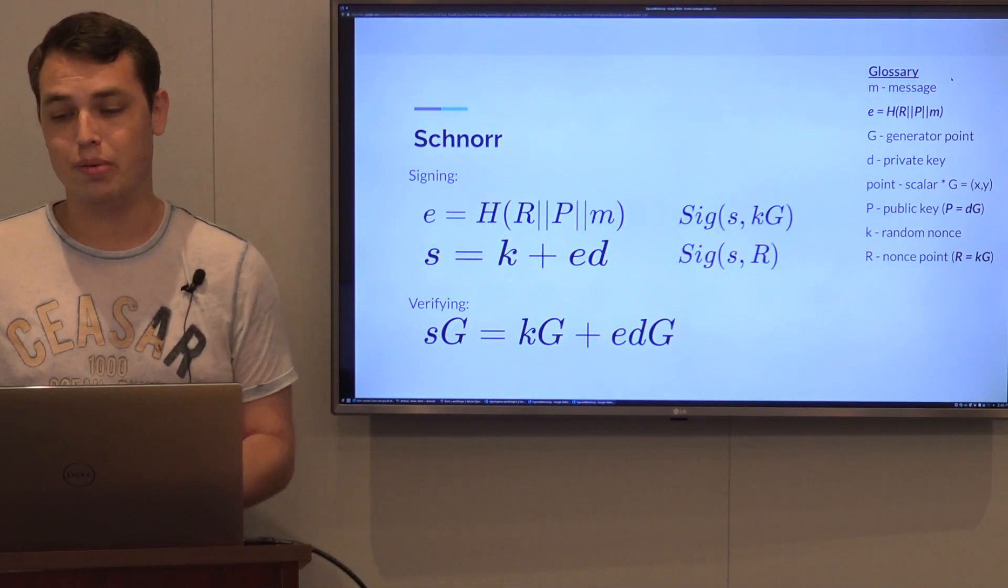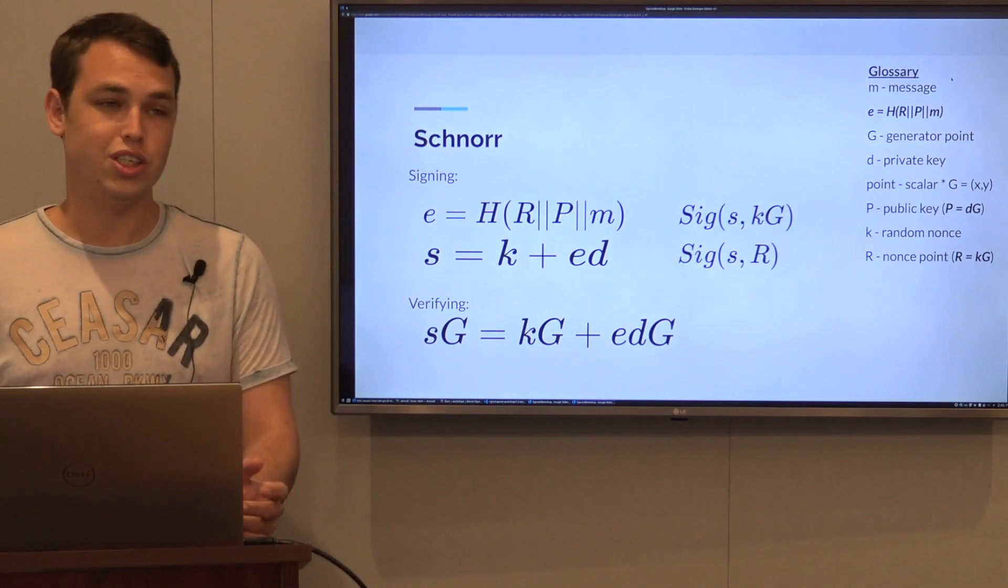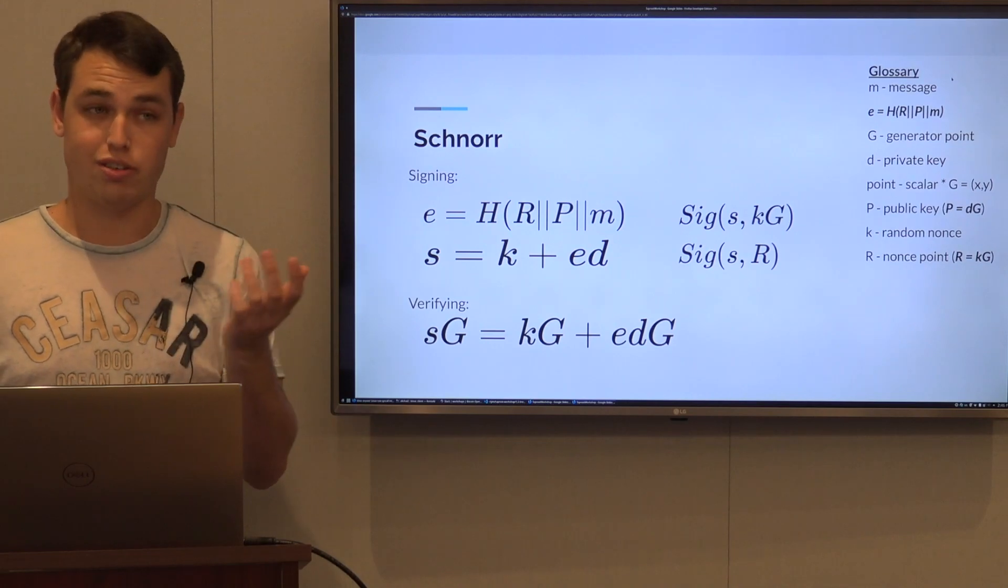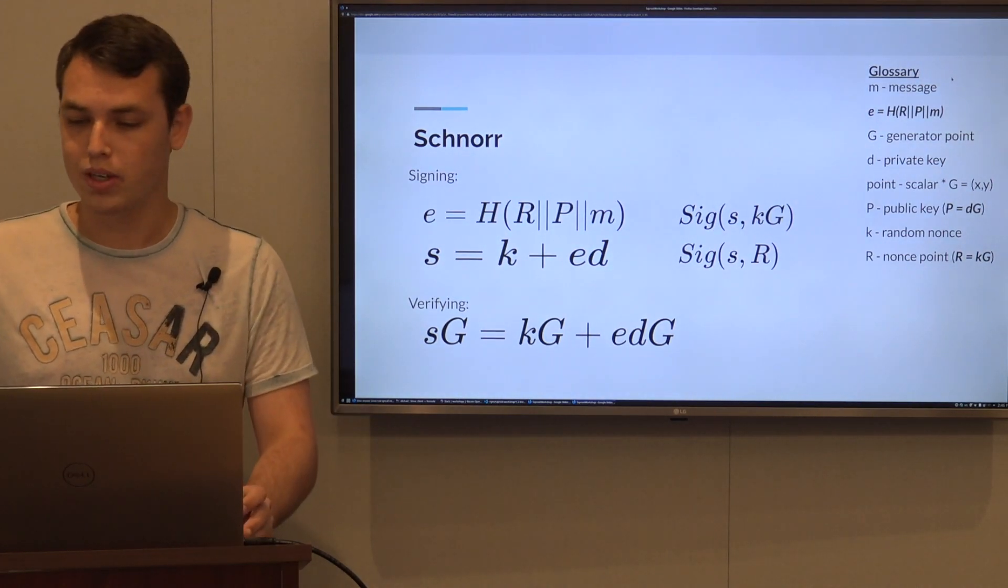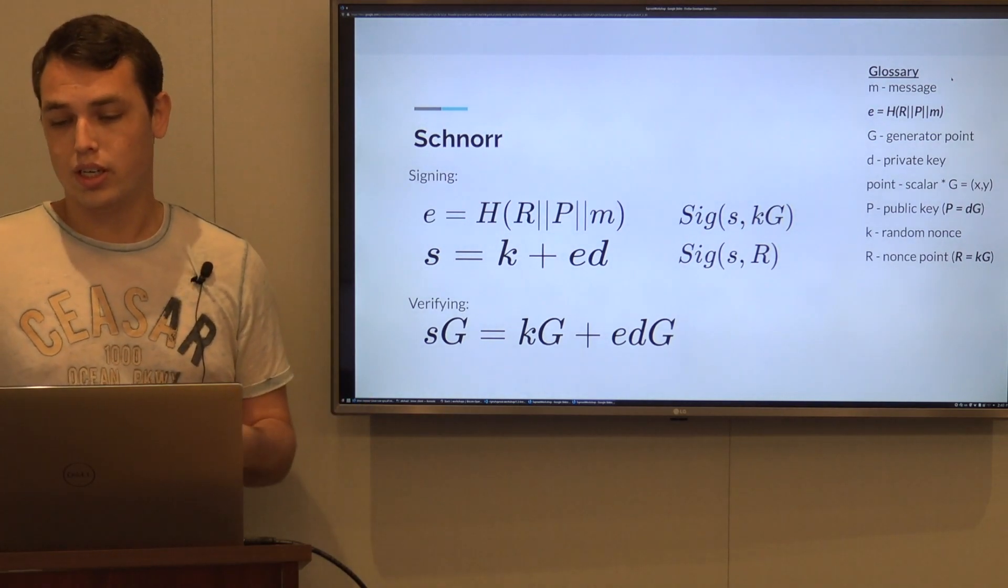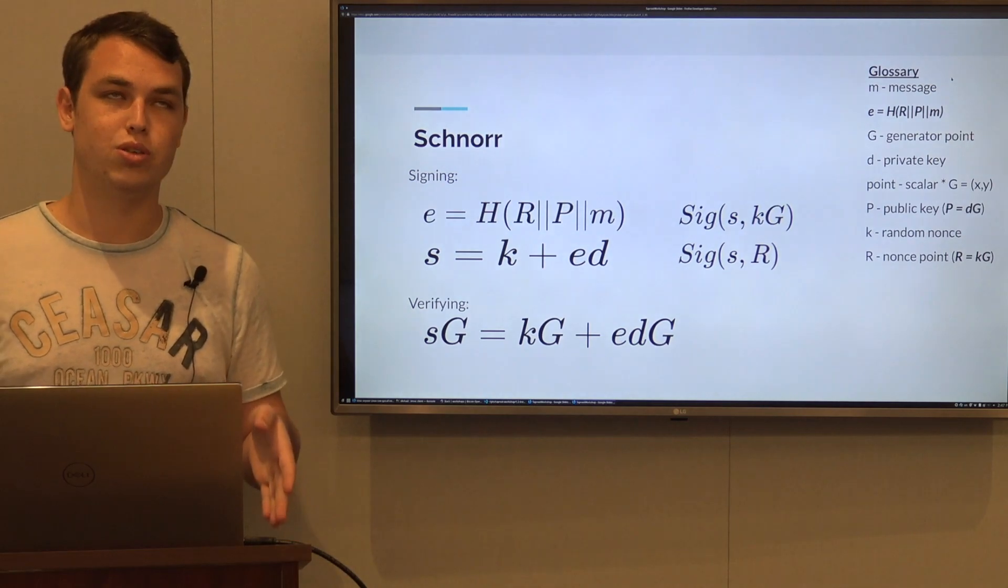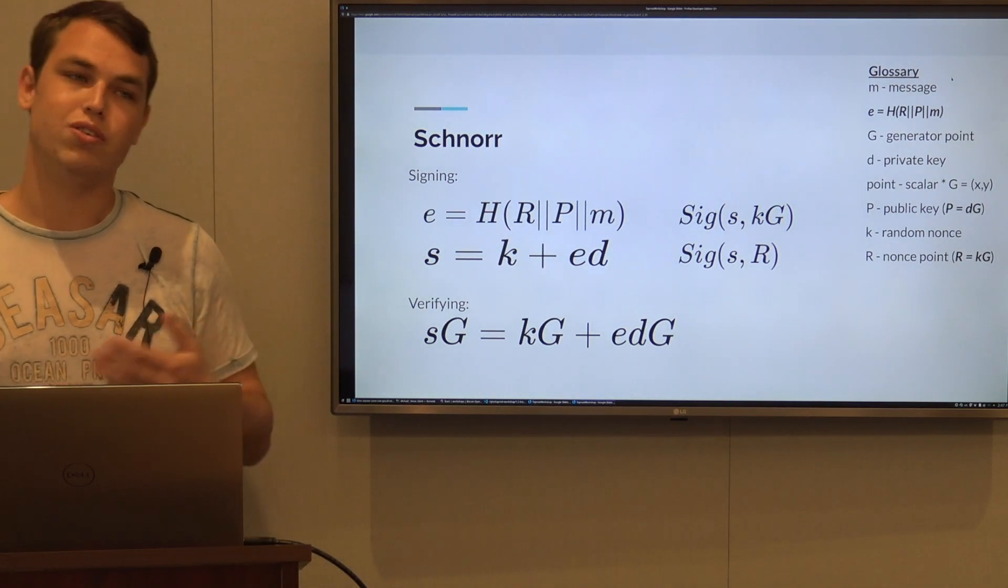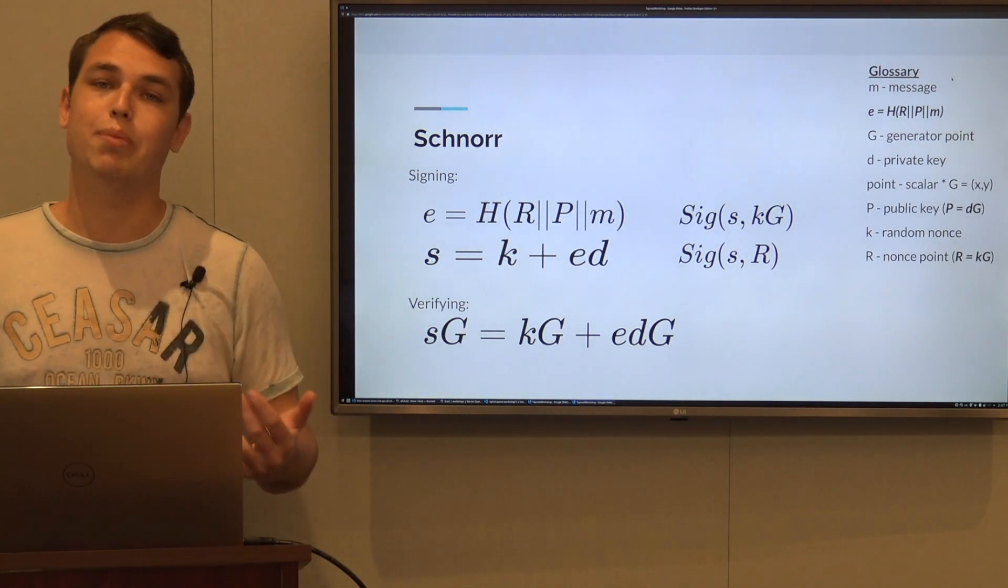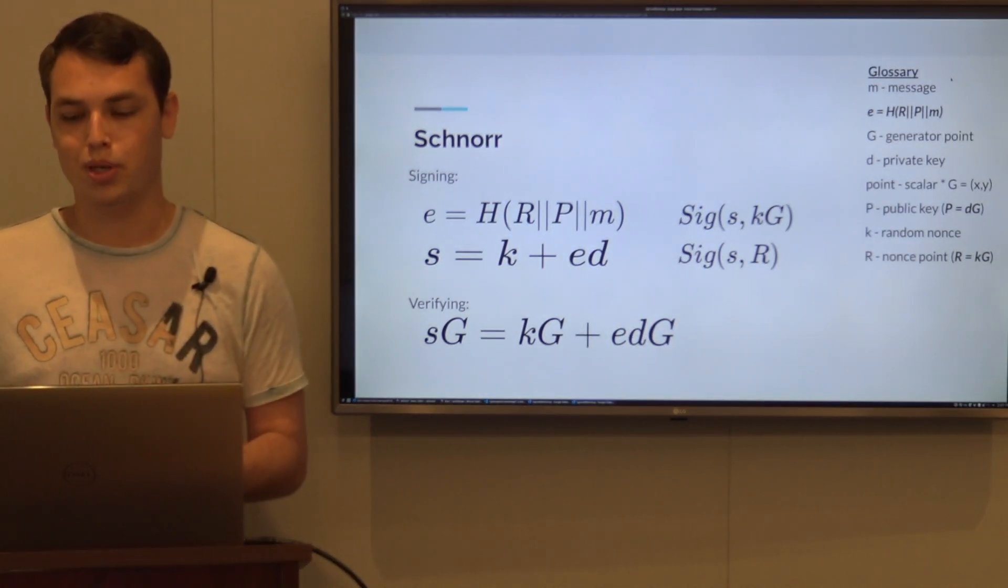We've talked about the private key, which is just some scalar. As we've said before, you can take a scalar, multiply by the generator, and get a point. The public key is actually just that - we take the private key which is a scalar, multiply by the point, and we get the public key.